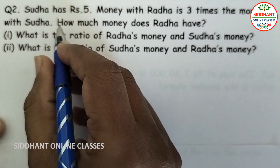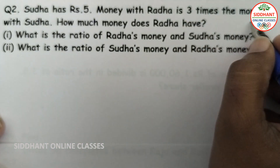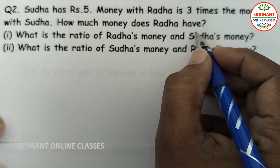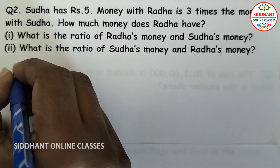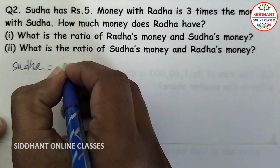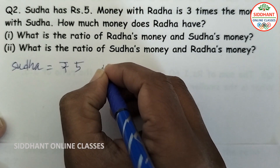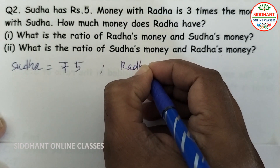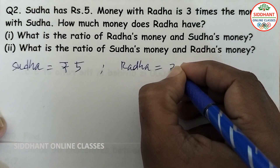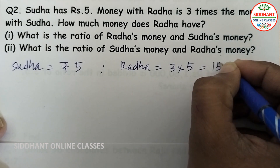Question number 2: Sudha has rupees 5, and money with Radha is 3 times the money with Sudha. How much money does Radha have? Sudha has rupees 5, and Radha has 3 times that, which means 3 into rupees 5, so that will be rupees 15.